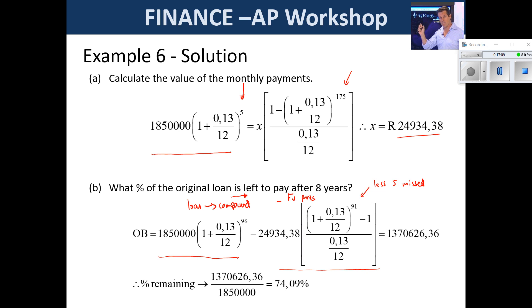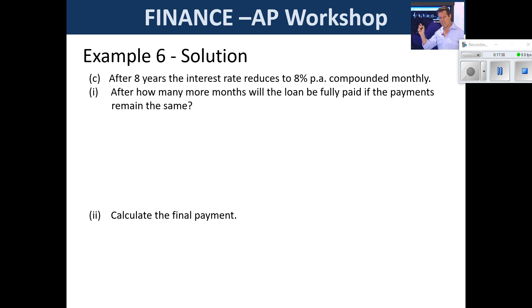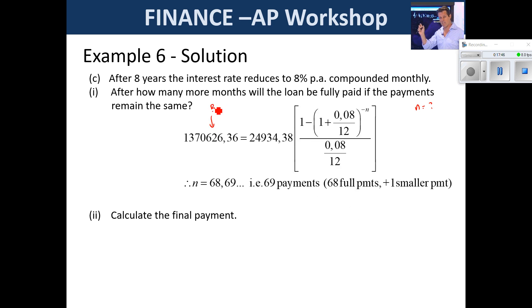We grow the loan to the particular point in time minus the future value of all payments made up to that point. This outstanding balance is then used in part C. They also asked what percentage of the original loan remains — divide this by the original amount for a percentage. For how many more months: solving for N gives approximately 68.69. This doesn't mean 68 and 69% of a payment — it means 68 full periods and this represents one smaller final payment.